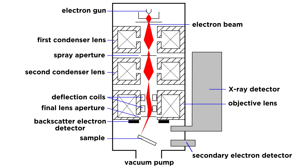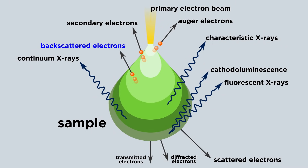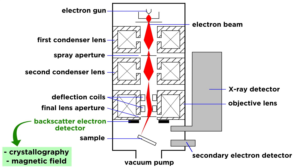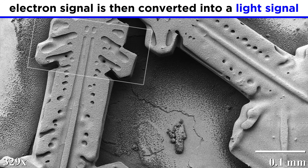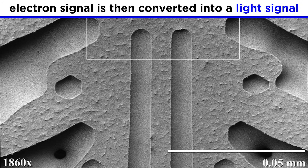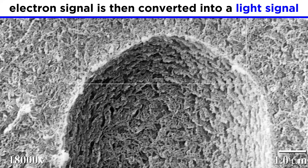There are two types of detectors in the sample chamber: the secondary electron detector and the backscatter electron detector. The backscatter electron detector picks up backscatter electrons that come from deeper regions of the sample, resulting from elastic interactions between the beam and the sample. The results from this detector are primarily used to look at crystallography and the magnetic field of the sample. But for the purposes of microbiology, researchers focus on the detection of secondary electrons, which allow them to visualize the topography of the sample, or the distribution of parts and features on the surface of the sample. The detectors convert the electron signal into a light signal that is amplified by passing through a photomultiplier before the final image is projected on a computer screen.